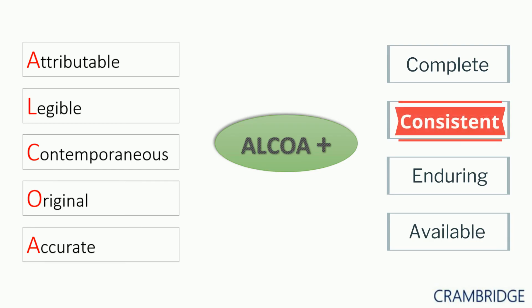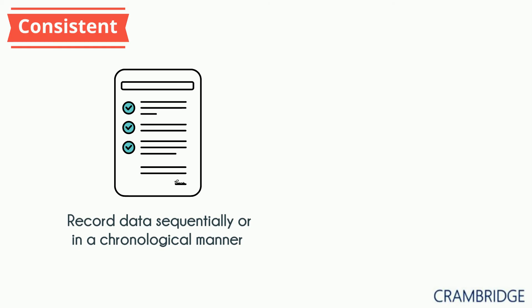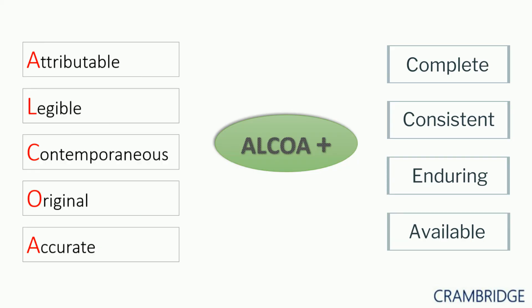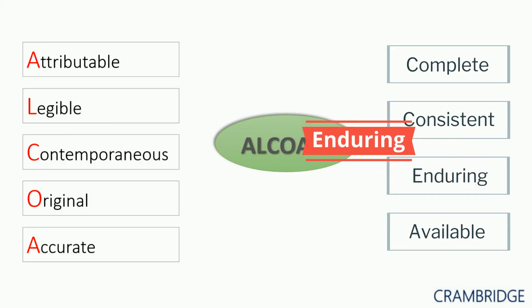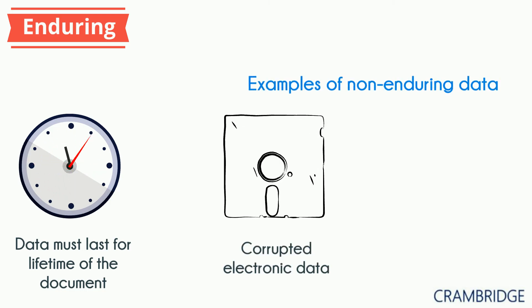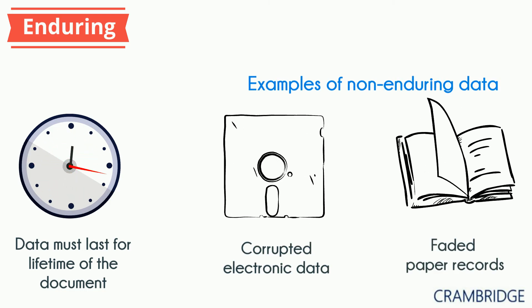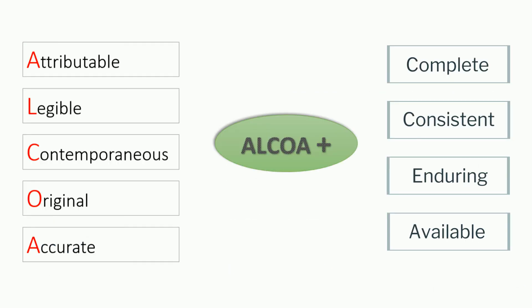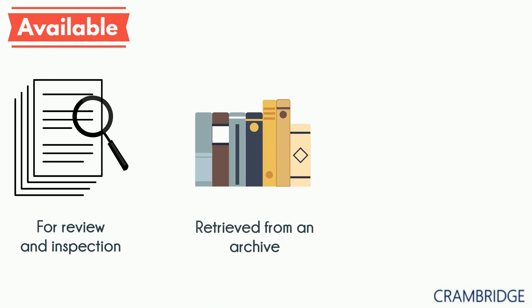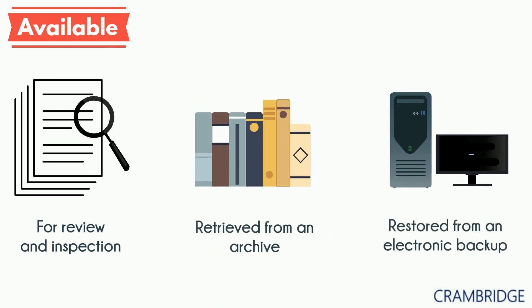For data to be consistent, it should be recorded in the expected sequence of execution, and the date and time must be evident in an audit trail. Data must be enduring — that means it should last throughout the data lifecycle. Corrupted electronic data or faded paper records are examples of non-enduring data. And finally, data must be available: for review and for inspection, data must be stored such that it can be retrieved from an archive or restored from an electronic backup quickly.